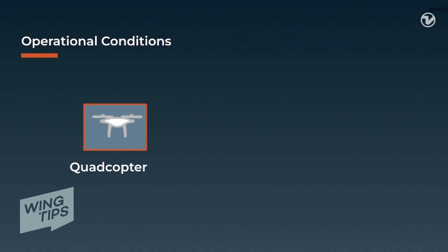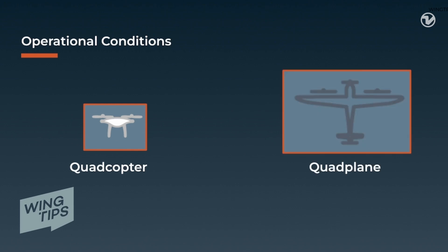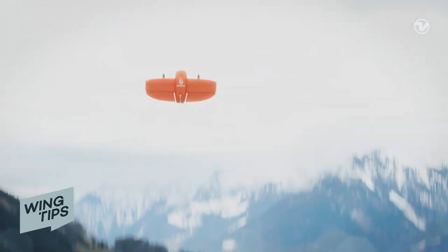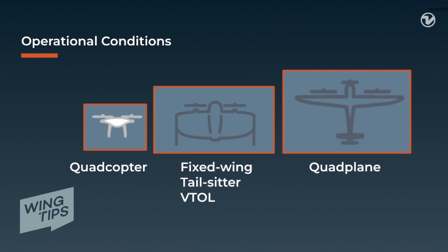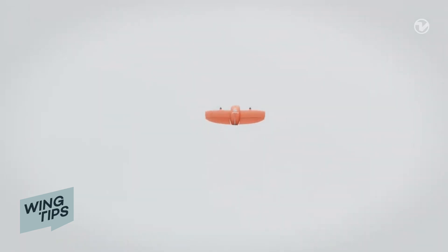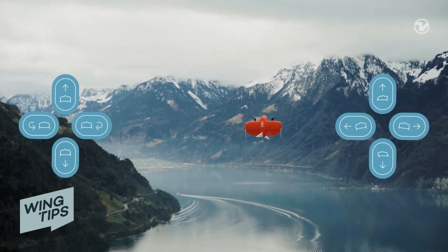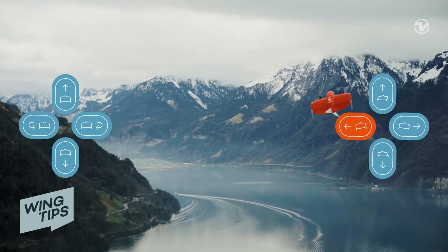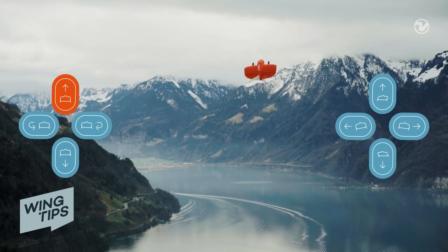Let's look at some operational conditions. All vertical takeoff and landing aircraft, known as VTOLs — whether it's a quadcopter, a quadplane, or a fixed-wing tail-sitter VTOL like the Wingtra 1 — they all share two basic modes of operation: hover and cruise. VTOL drones use significantly more battery in hover mode versus cruise mode, because the motors are working harder to keep the aircraft aloft and stable. Ultimately, time spent in hover shortens the flight time that you need to cruise and collect your mapping data.